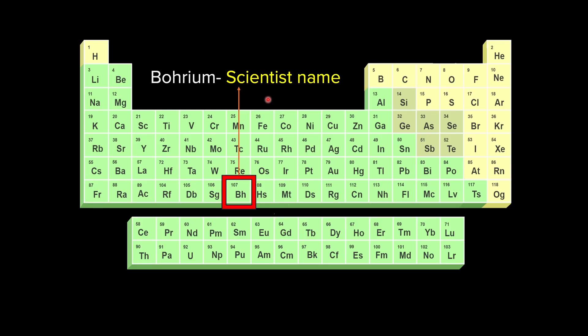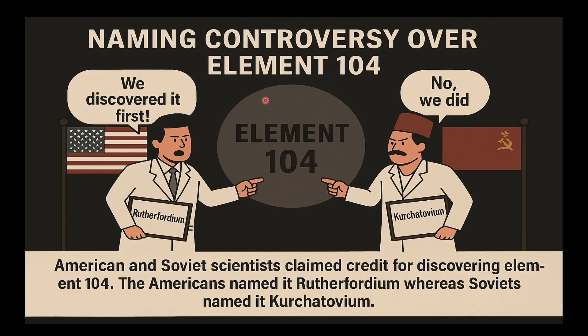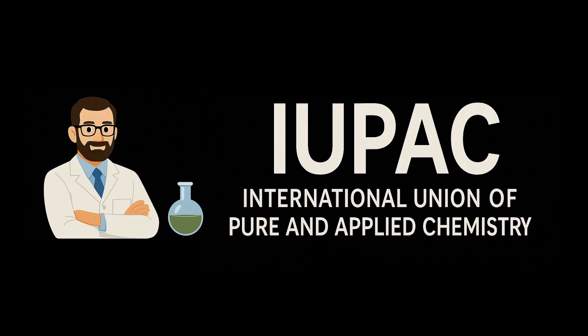Now it is interesting that the traditional practice of naming an element actually mostly lies in the discoverer's hands. So there can be controversy because of this as well. For example, here was a controversy for element 104. Both Americans and Soviet scientists claimed credit for discovering this element 104. The naming of the new elements had been traditionally the privilege of discoverer and the suggested name was then approved by IUPAC which is International Union of Pure and Applied Chemistry.